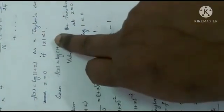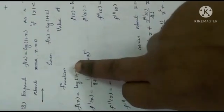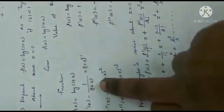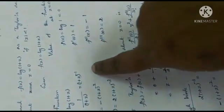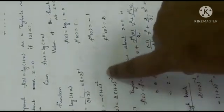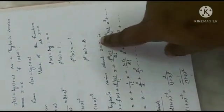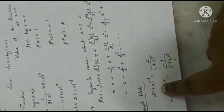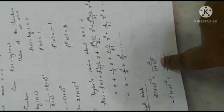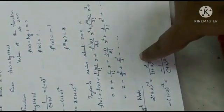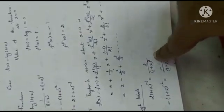Expand f(z) = log(1+z) as a Taylor series. When you differentiate log(1+z), you get 1/(1+z). Differentiating again, take the denominator to the numerator so you can reduce powers easily using x^n → n·x^(n−1). After reducing the power, differentiate (1+z), which gives 1. Do up to the third derivative and substitute z = 0 to find the answer, since Taylor series about z = 0 is Maclaurin series.